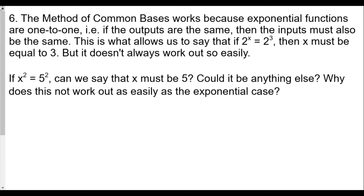For example, if the outputs are the same, then the inputs must also be the same. This is what allows us to say that if 2 to the x equals 2 to the third, then x must equal 3. But it doesn't always work out so easily. If x squared equals 5 squared, can we say that x must be 5? Could it be anything else? Why does it not work out as easily as the exponential case?